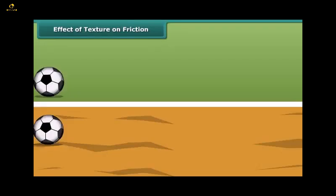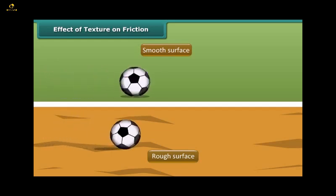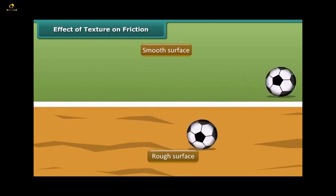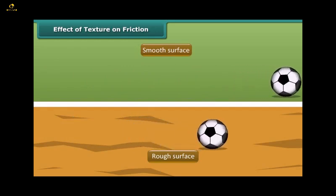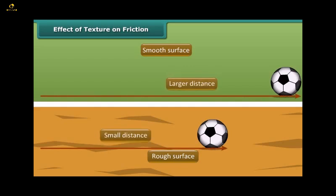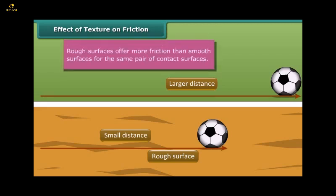In the figure, a ball is rolled on a smooth surface and another similar ball on a rough surface. As you see here, both balls start rolling on different surfaces with the same speed, same force, and at the same time. But the ball rolling on the smooth surface travels a larger distance than the ball rolling on the rough surface. This shows that rough surfaces offer more friction than smooth surfaces. This example proves that friction depends on the texture of contact surfaces.